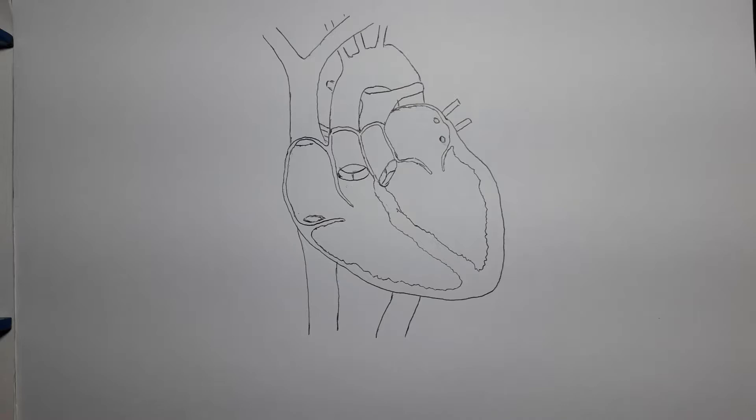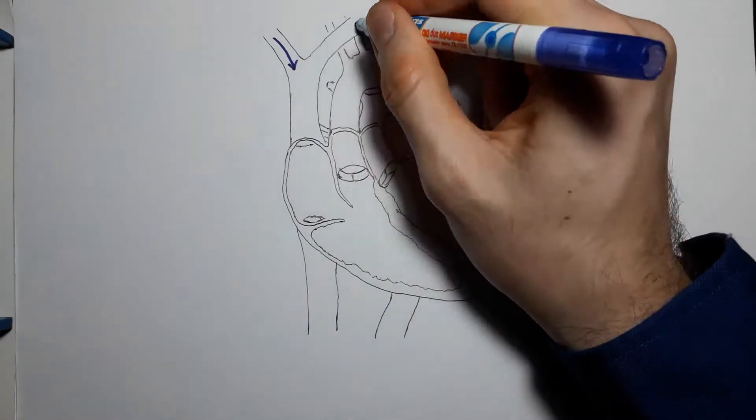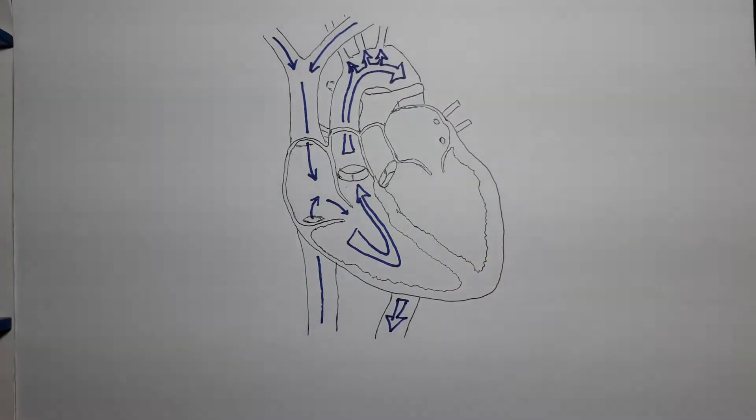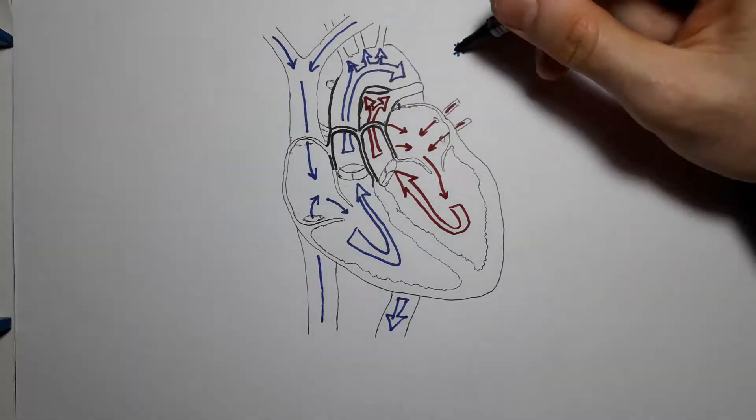For those not in the know, ipsilateral means on the same side of the body. The reason this is disastrous is because it creates two closed-loop circulation systems, one for the systemic circulation and one for the pulmonary circulation.